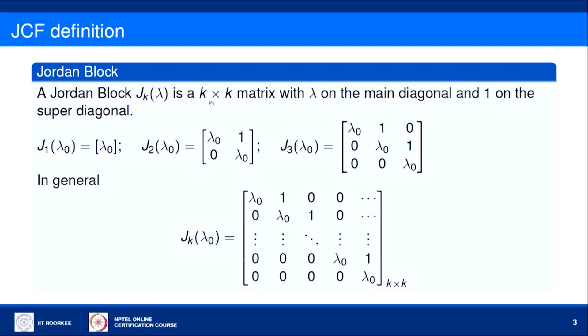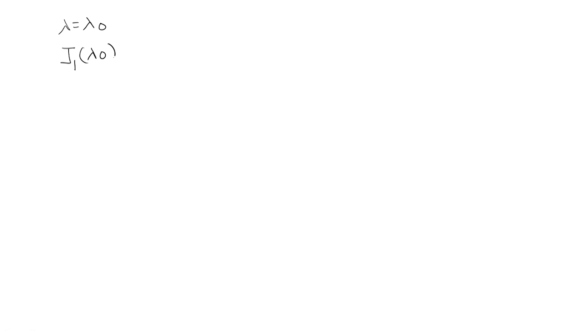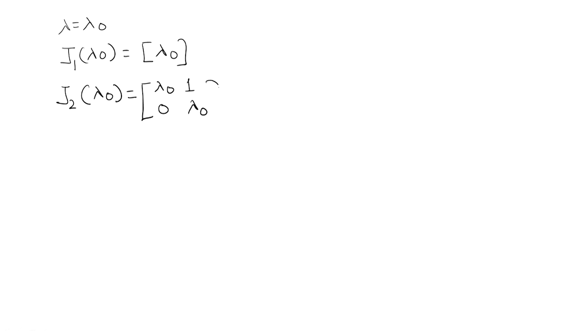The definition of a Jordan block: a Jordan block corresponding to a given eigenvalue λ₀ is a K×K matrix with λ₀ on the main diagonal and 1 on the super diagonal. For example, a Jordan block of size 1 with eigenvalue λ₀ is just [λ₀]. A Jordan block of size 2 is a 2×2 matrix with λ₀ on the main diagonal, 1 on the super diagonal, and 0 below.